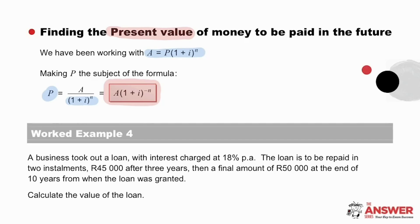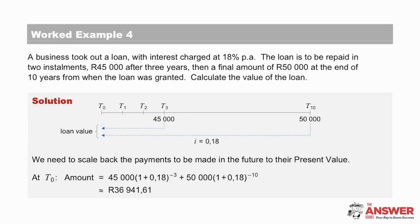Let's have a look now at an example. So here, a business took out a loan. The rate of interest was 18% per annum and the loan is to be repaid in two installments, 45,000 after three years and a final amount of 50,000 after 10 years. We have been asked to calculate the value of the loan. Lots of information given in this question of things happening at different times, so a great opportunity to use a timeline. Maybe pause here and give it a try first before moving on to see the solution. So first of all, let's remember from the question that our time periods are in years. Then here you can see the 45,000 at T3 and the 50,000 at T10. And then just a reminder to always add in the interest rate on the timeline.